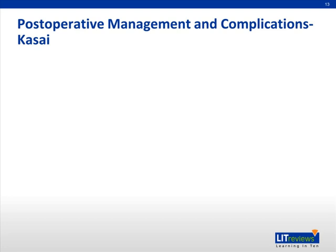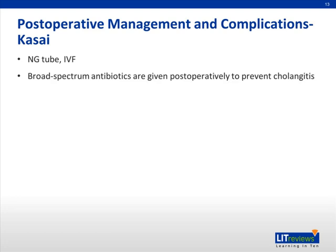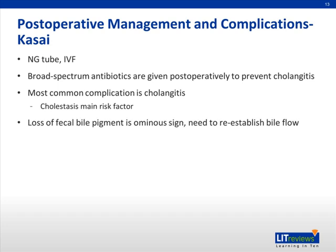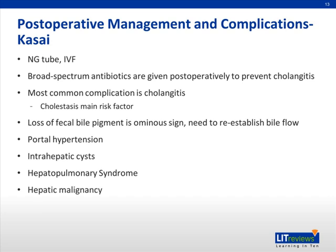Post-operative management of patients who undergo the Kasai procedure should include an NG tube and IV fluids. Broad-spectrum antibiotics are given post-operatively to prevent cholangitis. The most common complication of the Kasai procedure is cholangitis. Cholestasis is the main risk factor for cholangitis. The loss of fecal bile pigment is an ominous sign, and one needs to re-establish bile flow immediately. Other complications include portal hypertension, intrahepatic cysts, hepatopulmonary syndrome, and hepatic malignancy.